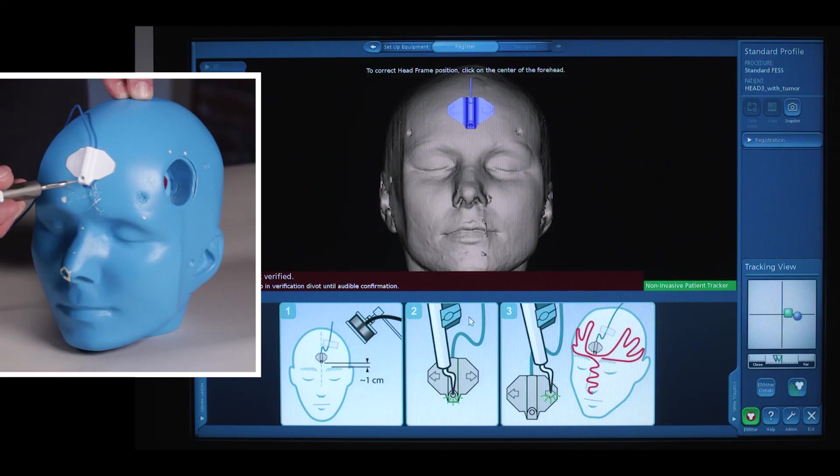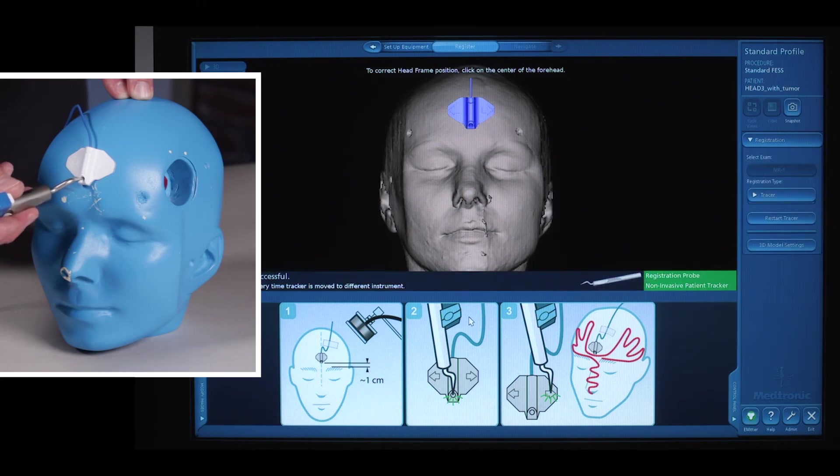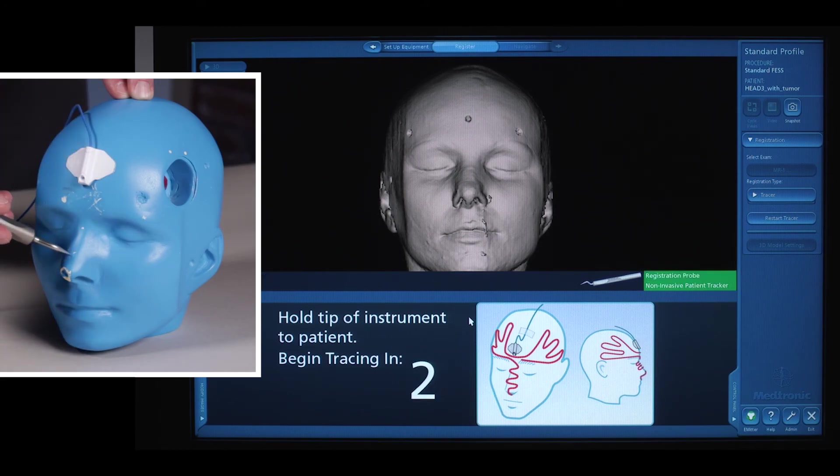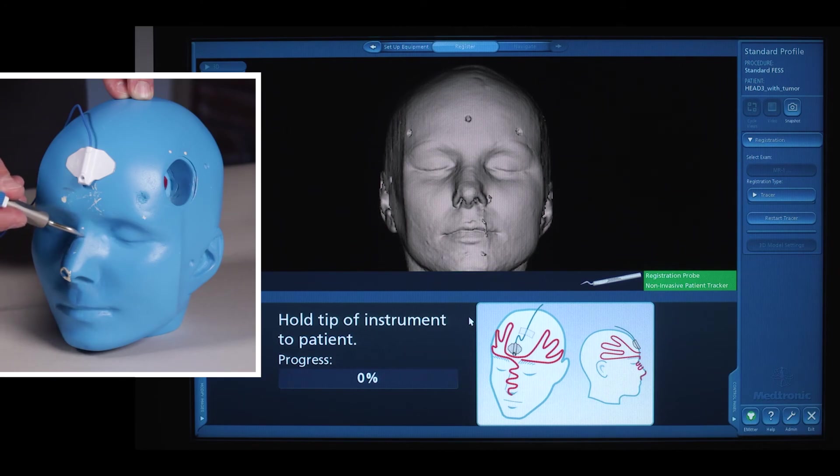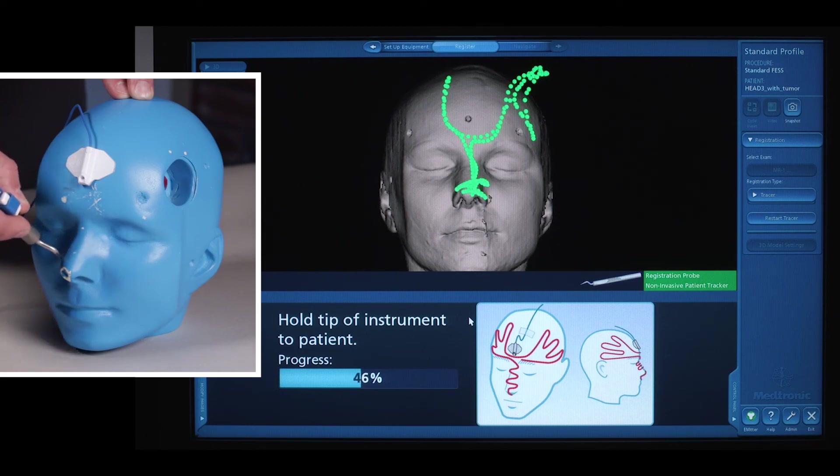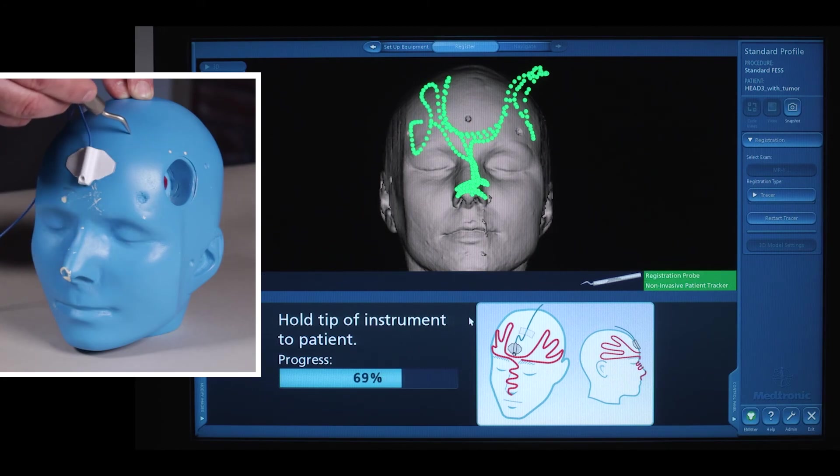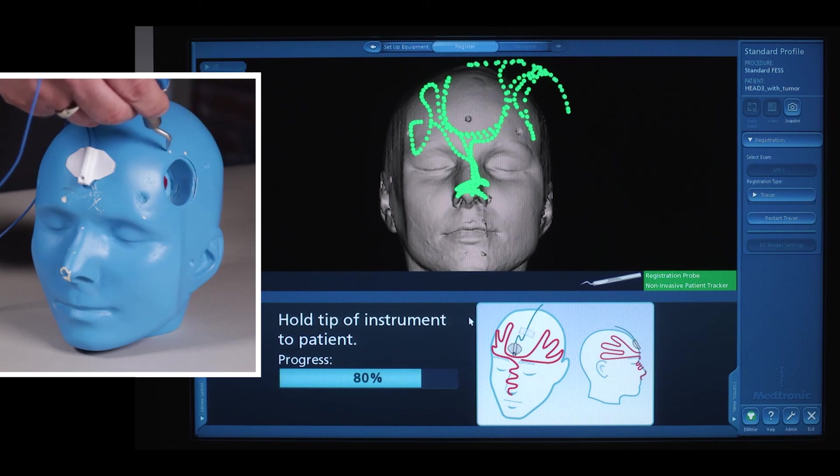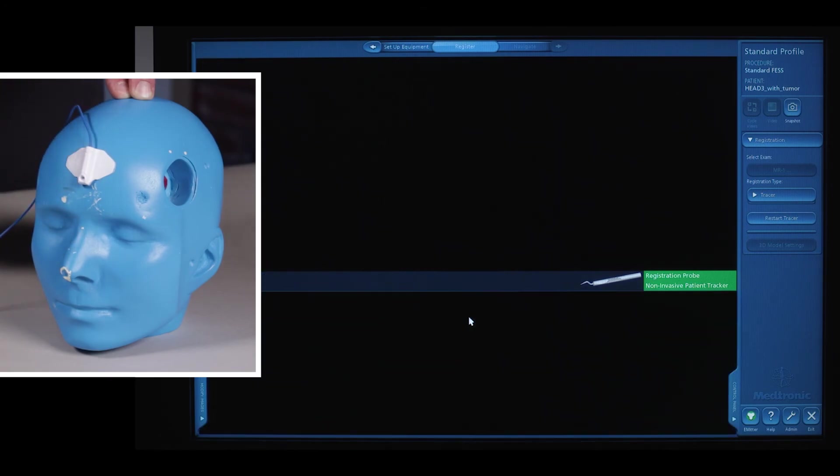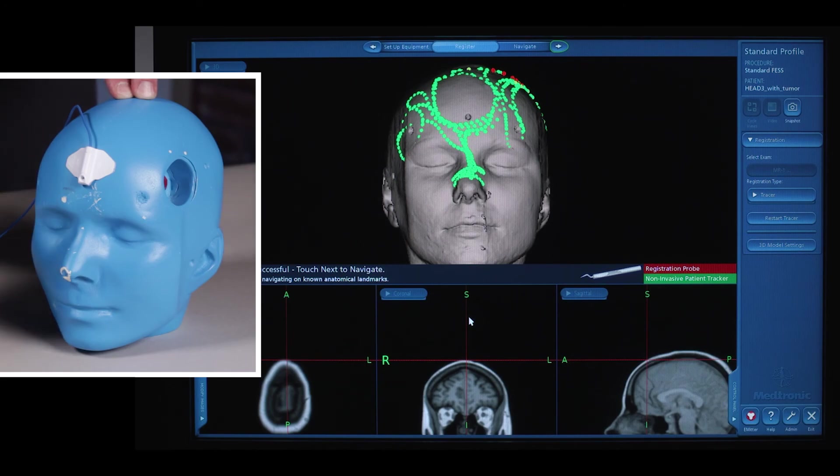To begin registration, verify your probe in the divot. Then hit the next button. You'll get a five second countdown. Make sure that the probe tip is on the skin. Begin tracing on the anatomy, staying on bony anatomy only. Tip of the nose, the sides of the nose are all fair game. Avoid the cheeks, lips, or any other soft movable tissue. The more of the head you can include in the field, this will aid in accuracy. Once the system calculates that the registration is successful, verify some landmarks.